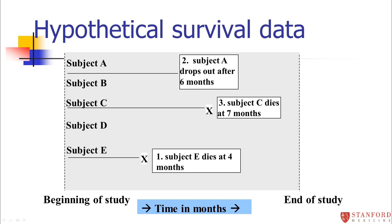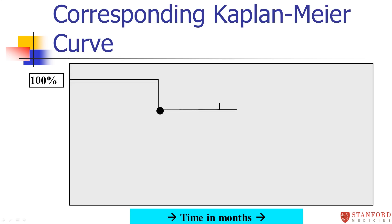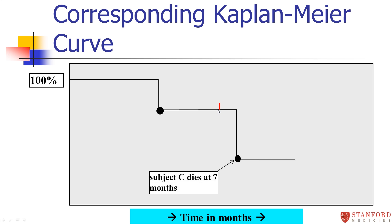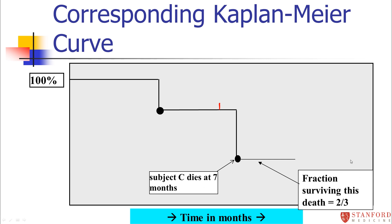The next thing that happens is subject C dies at seven months. That's another event, so we drop the survival curve. Notice that at six months, I'm indicating where subject A dropped out with a little bar — this indicates the censoring. Now, right before seven months, there were actually only three people at risk of dying. We're not counting subject A in the denominator because they were censored. So our denominator is three rather than four, and two out of three survived this second interval from four to seven months.